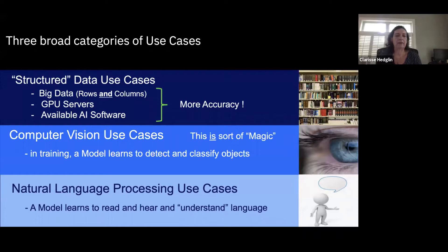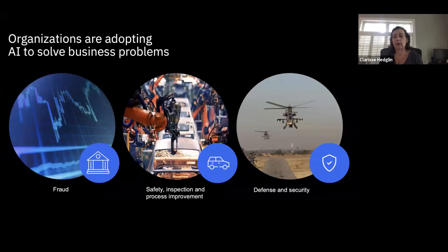The final category of use cases is around natural language processing. Many techniques have developed to get a better understanding of speech to text and text processing — Word2Vec, for example, is a very popular model in that space. Of course, these are all applied to different industries. You can look at AI improving insights in fraud and banking, safety inspection, manufacturing quality inspection, process improvements, and defense and security.